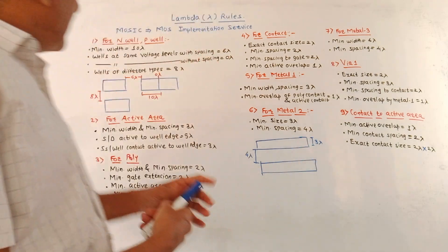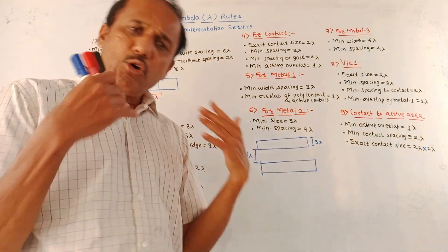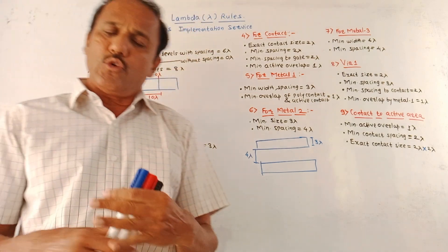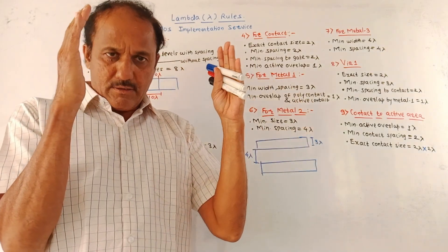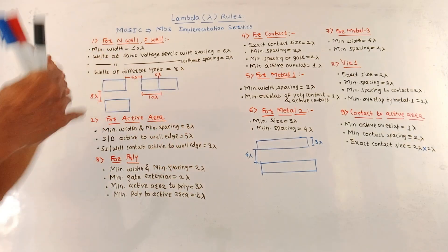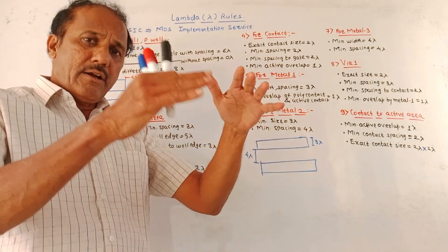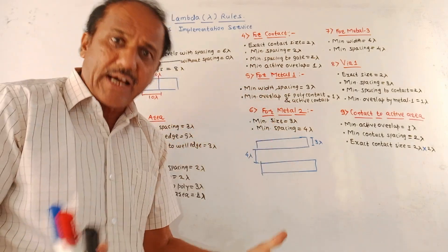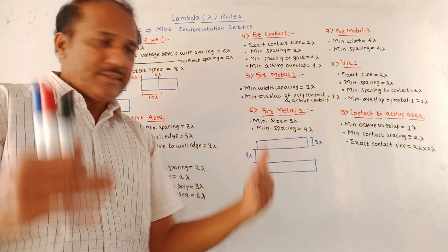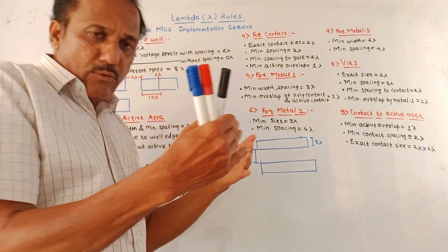Next is MOSIS — Metal Oxide Semiconductor Implementation Service — design rules, which are the CMOS design rules. First we will talk about lambda rules, which is the most important part. From the exam point of view, you may expect a question like: write and explain the different lambda rules. In MOSFET design, different layers, metal connections, wire contacts, and interconnections are used, and certain rules must be followed while designing.